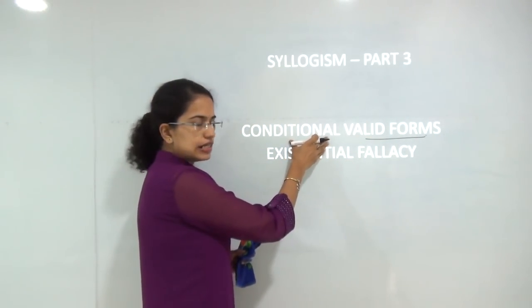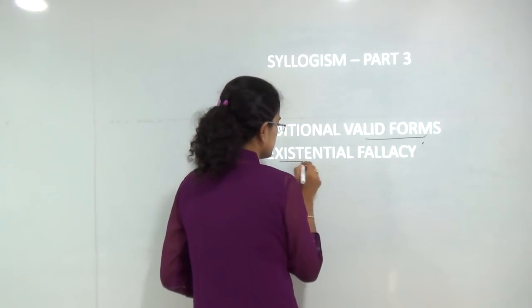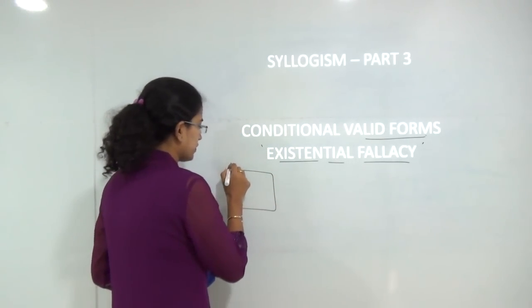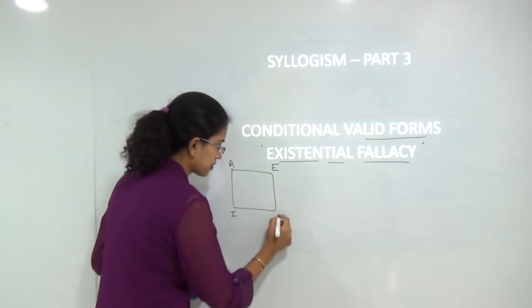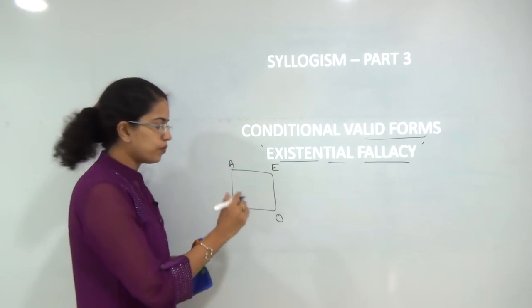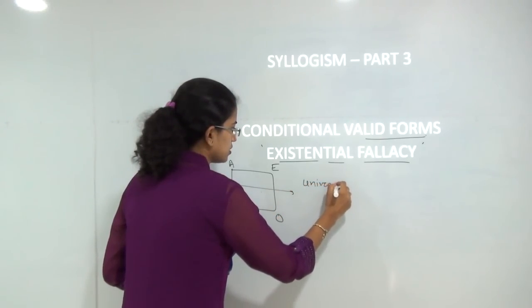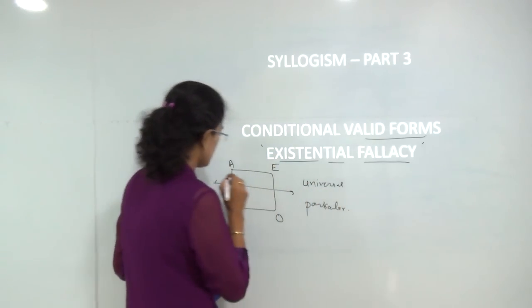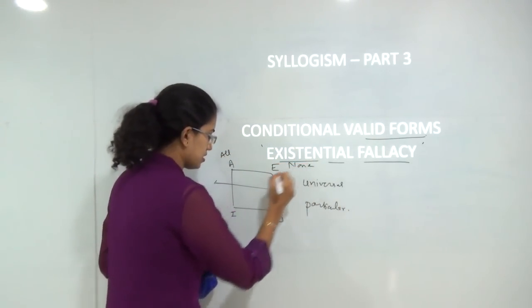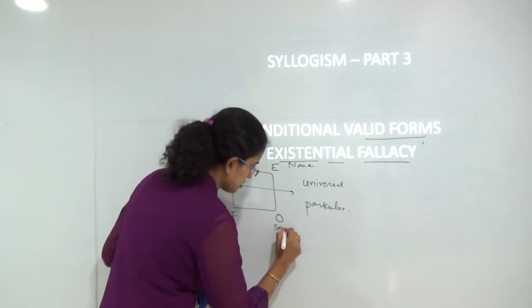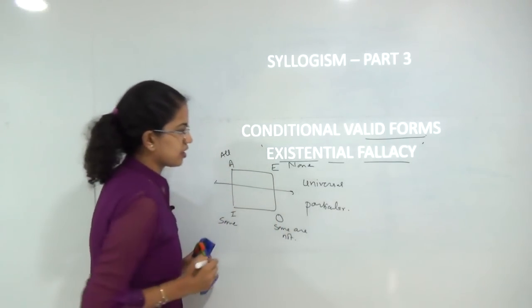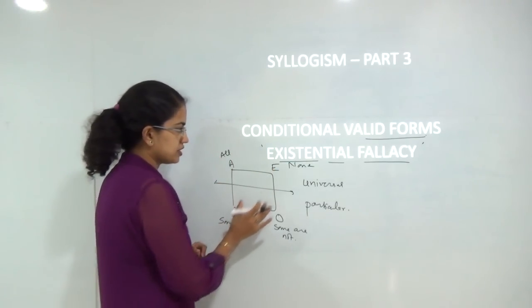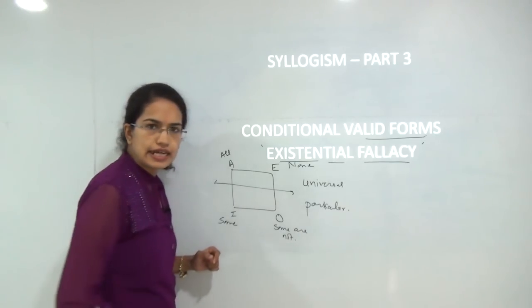When we apply conditional valid forms, we use a term known as existential fallacy. Let's do a quick recap of what we have done. We talked about the square of opposition which mentions A, E, I and O — the above two as universal statements and the below two as particular statements. A is 'all', E is 'none', I is 'some', and O is 'some are not'. The left-hand side are affirmative statements and the right-hand side are negative statements.